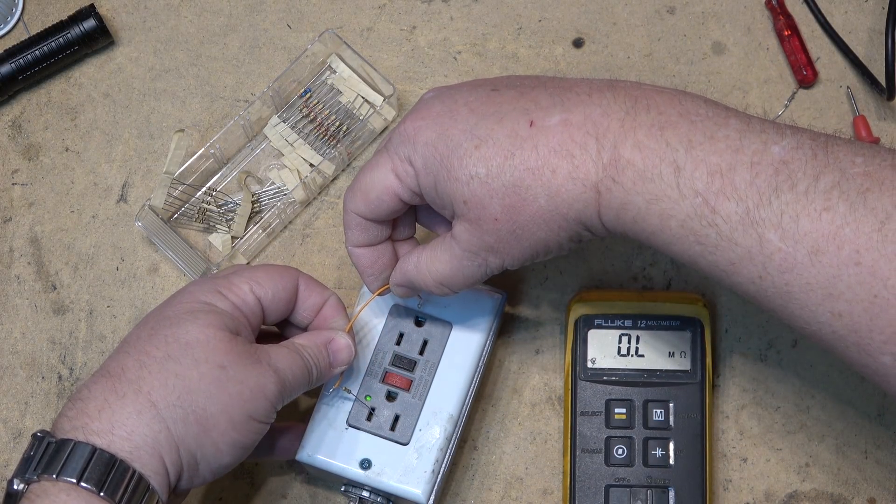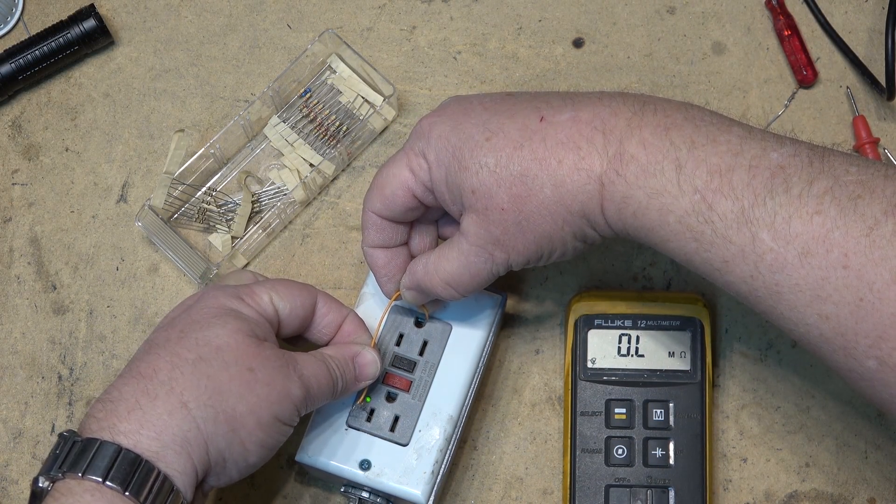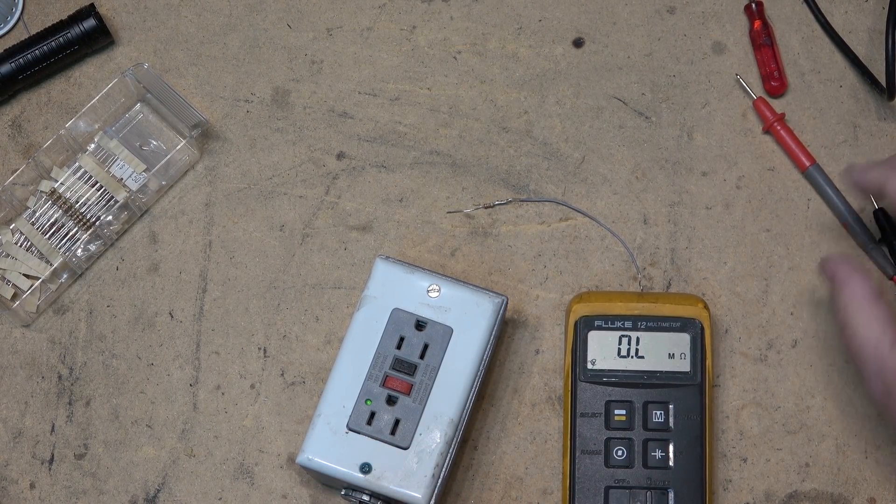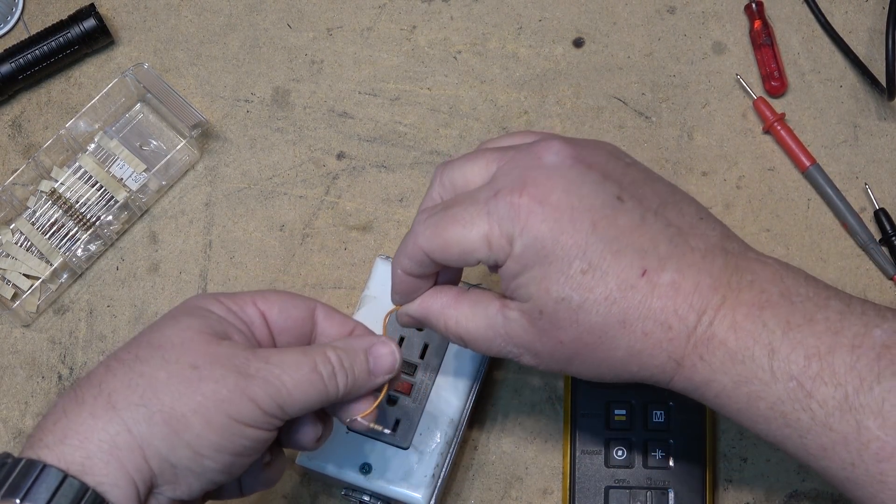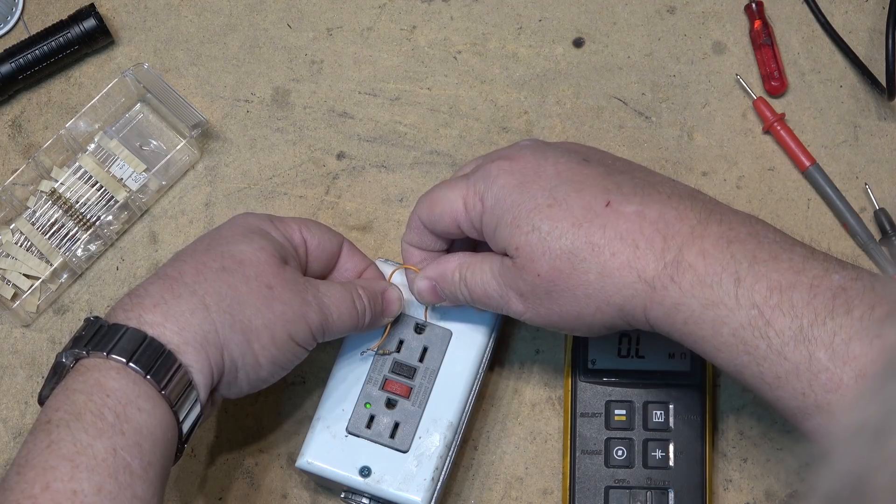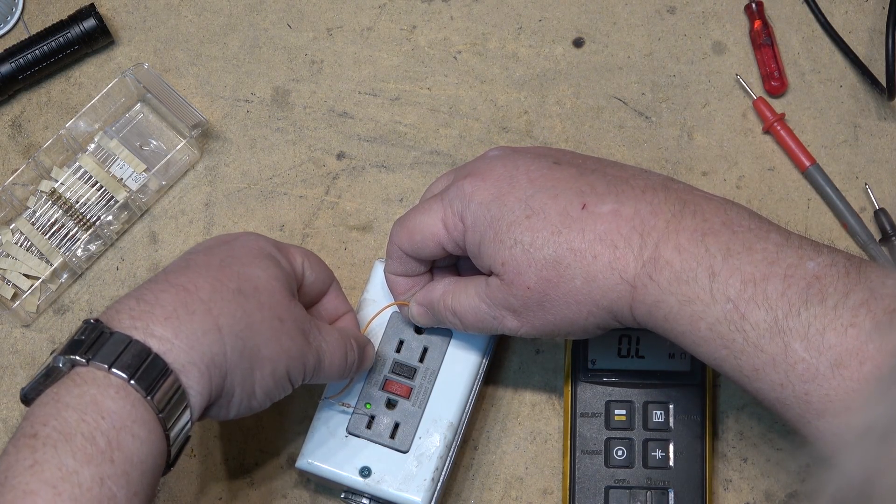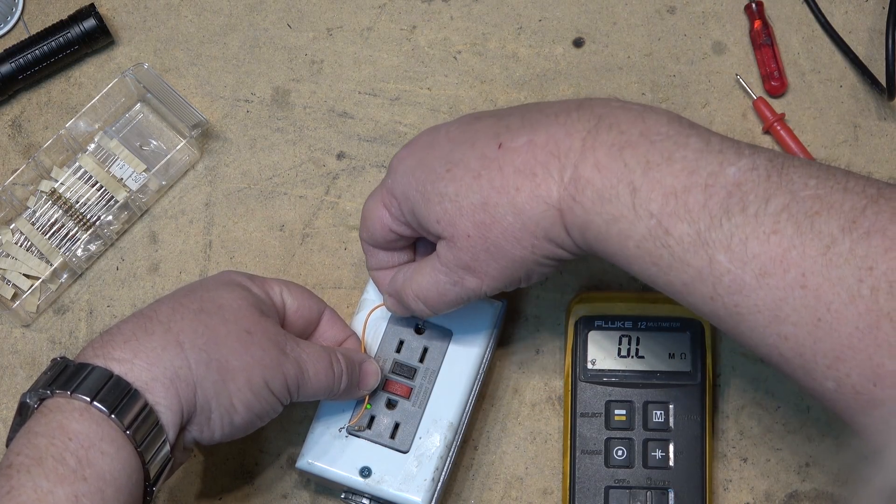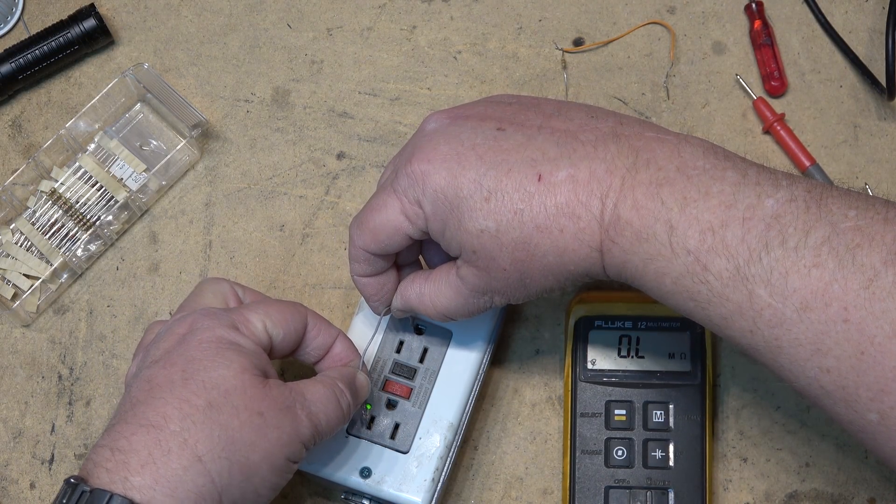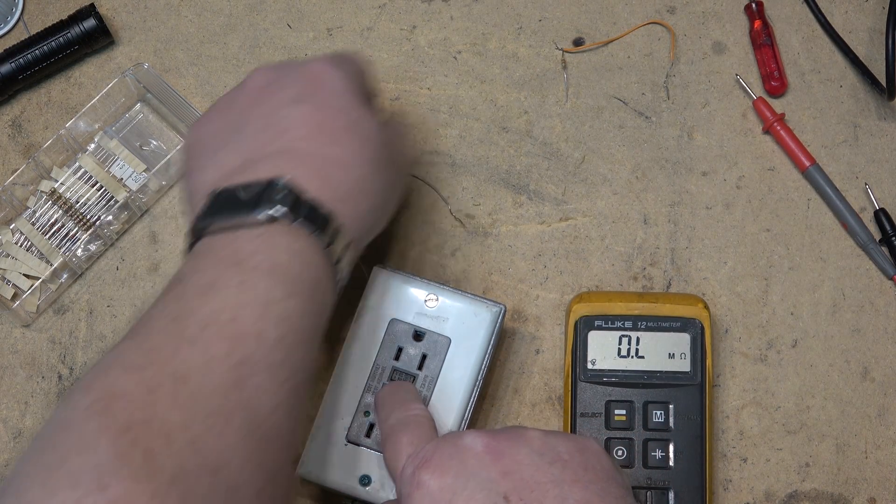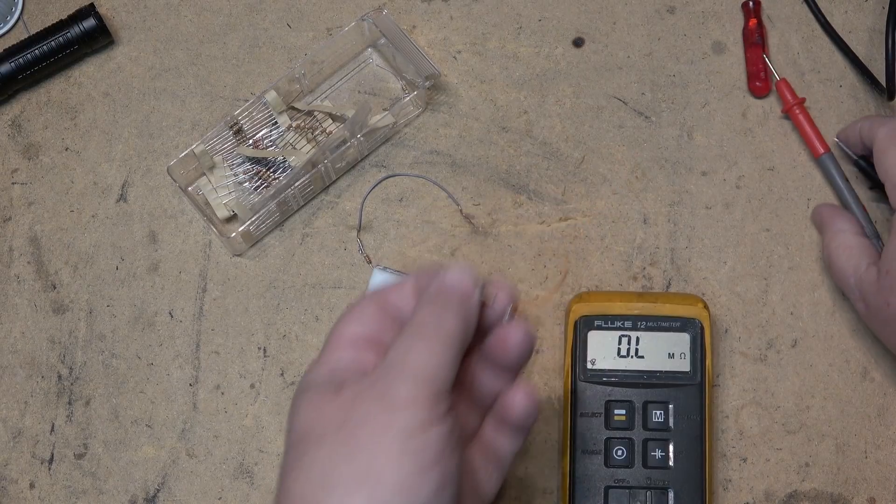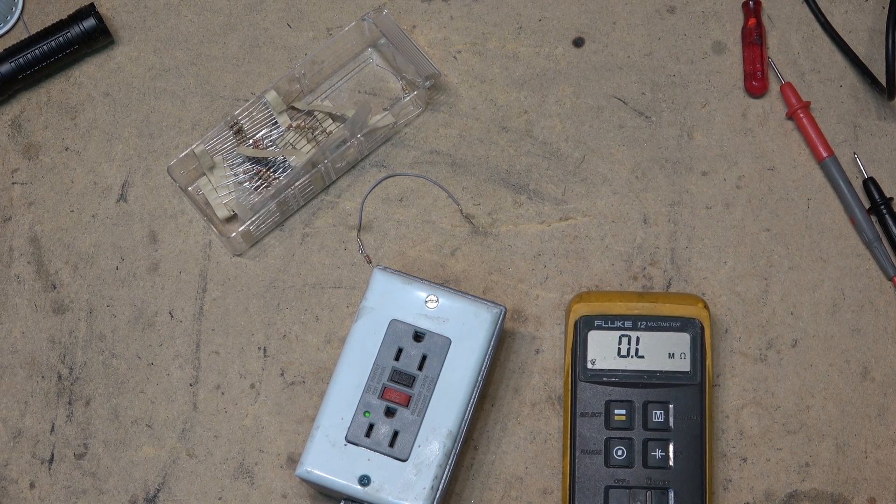This time we're going to use a 100k resistor, and like before, 100k is not going to draw enough current to trip the GFCI. This time we'll do it with a 47k, and again like the 100 and the 1 meg, there's not enough current to activate the GFCI circuit. You can hear the supervisor's complaining. If we go back to the 22k, of course it'll trip immediately. Next we'll try a 33k resistor, and once again the GFCI is not going to trip.